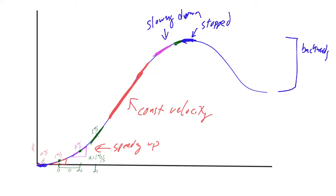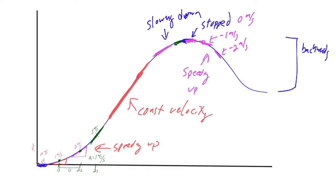In this next curve, we start stopped at zero meters per second. The slope is gradually increasing but in the negative direction — a negative slope. Let's say it goes to negative 1, then negative 2. We're speeding up, but speeding up in the negative direction — speeding up backwards.